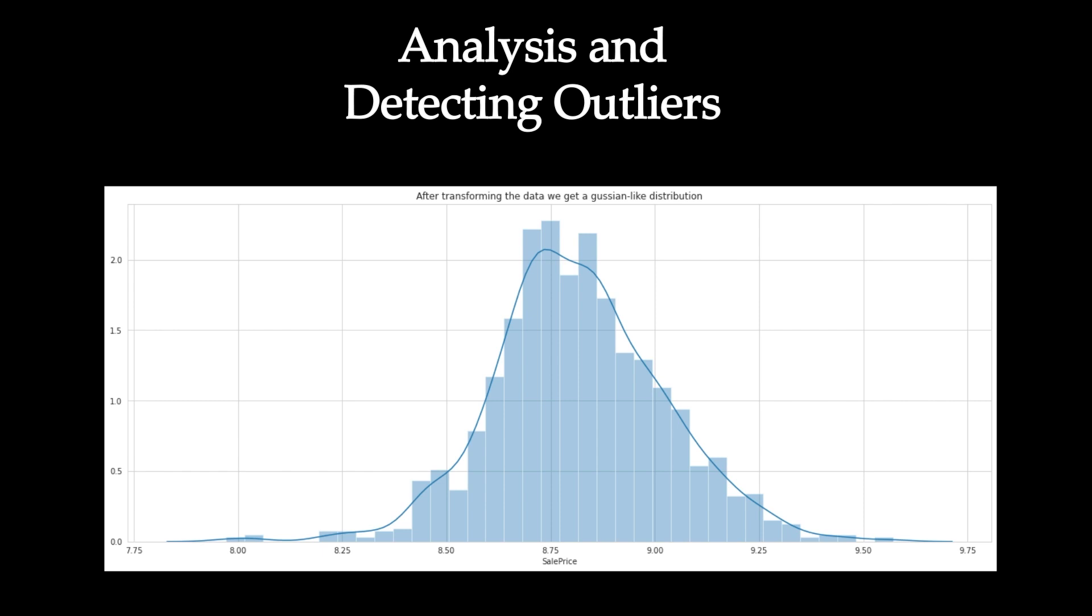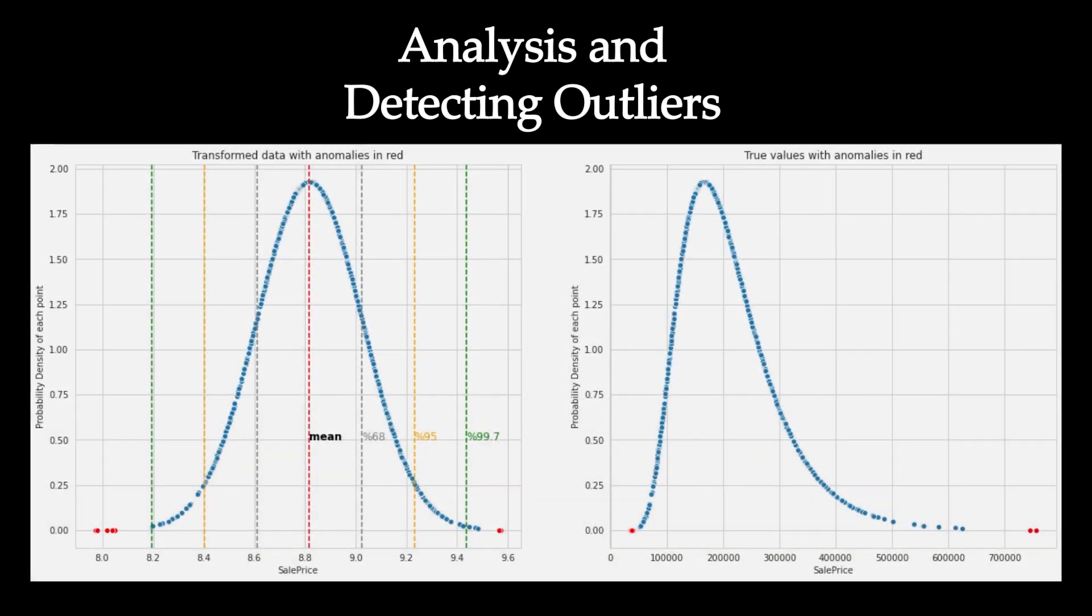Now our data is Gaussian-like and we can confidently say that we will be detecting the ones that are really outliers. Right now what we do is start dividing our data with a method called six sigma. What we mean by this term is that around 99.7% of our data is actually within three sigmas after and three sigmas before the mean. So we can say whatever point deviates more than three sigmas from the mean is an anomaly.